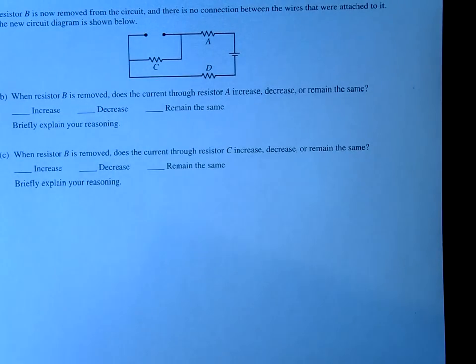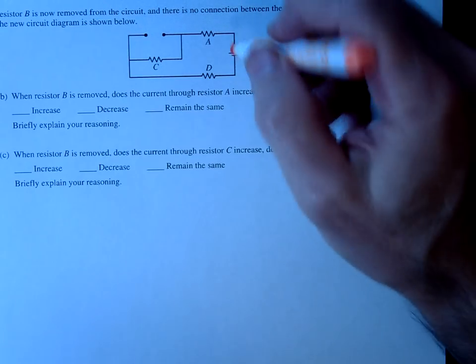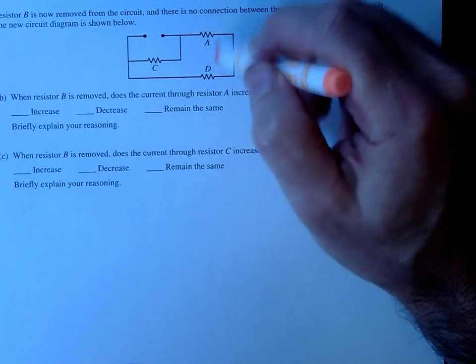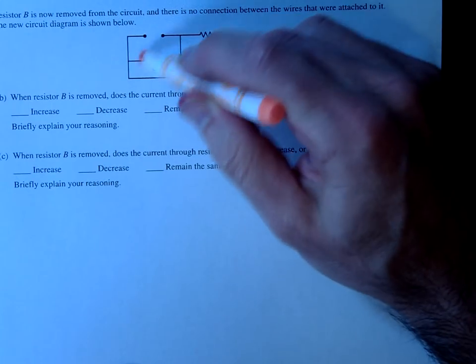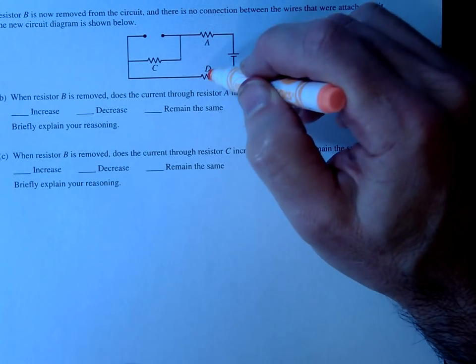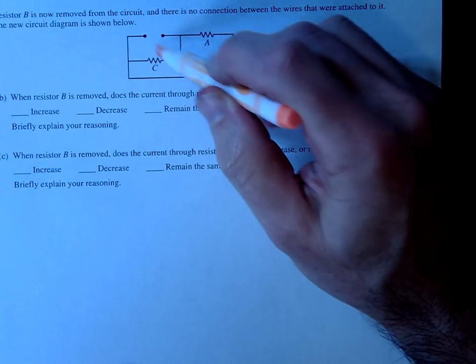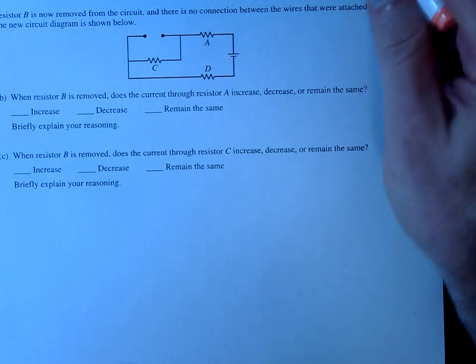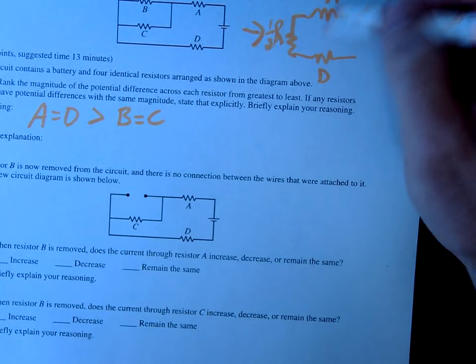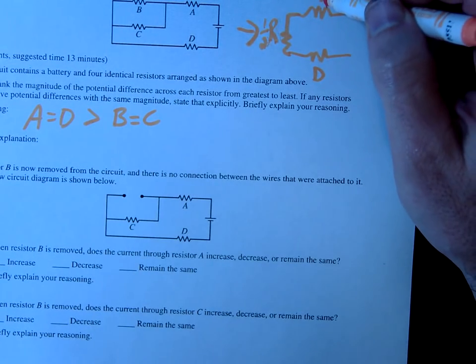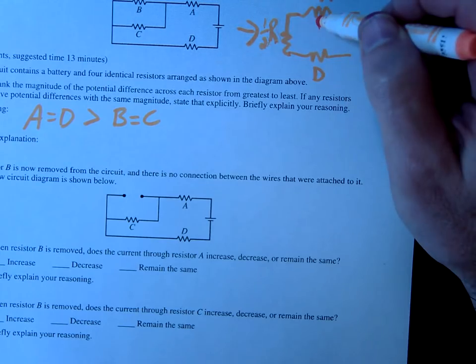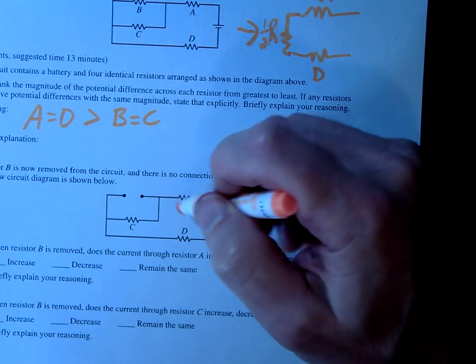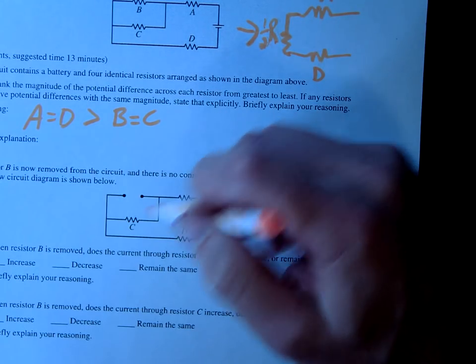We're going to take out B and see what happens. So notice, once we take out B, we just have a nice simple series circuit. And so, in fact, the overall resistance should go up. If you notice, in this one, our equivalent resistance would be R plus R plus half R. In this one, the equivalent resistance would be R plus R plus R, or 3R.